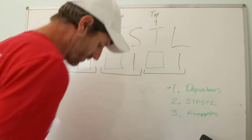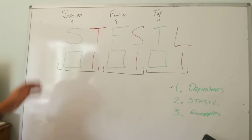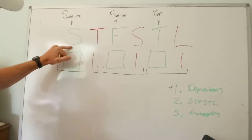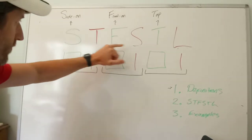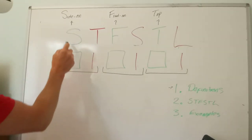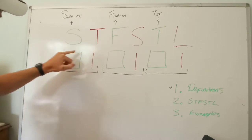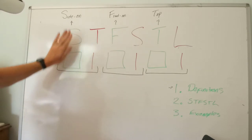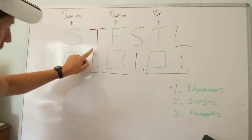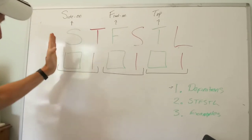First of all, you need to understand the definitions of all of these. What I've done is put these as a green square for the plane and a red line for the axis.